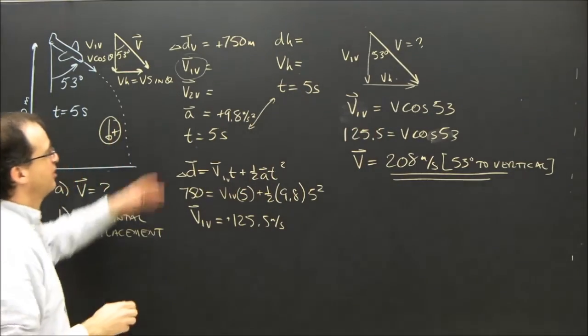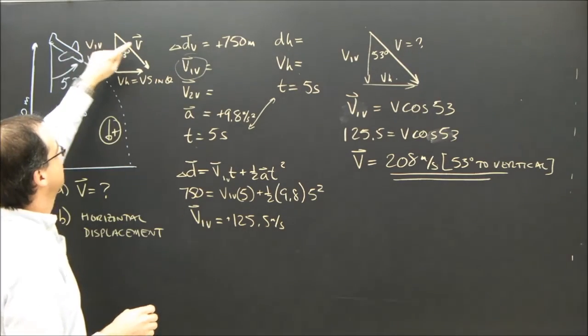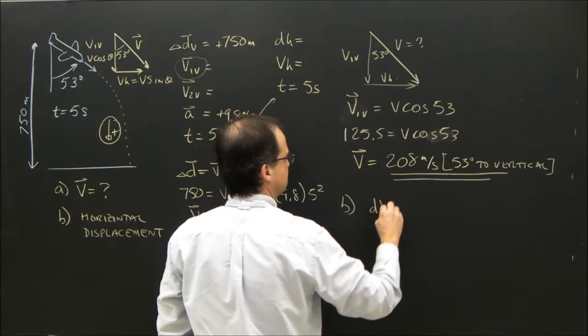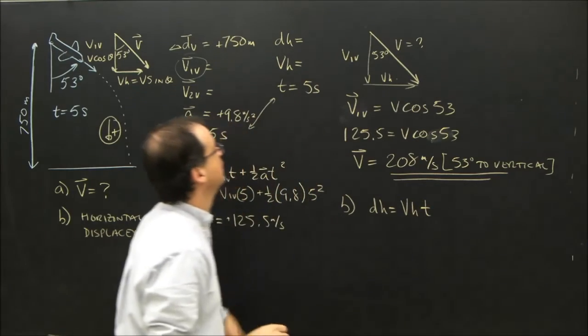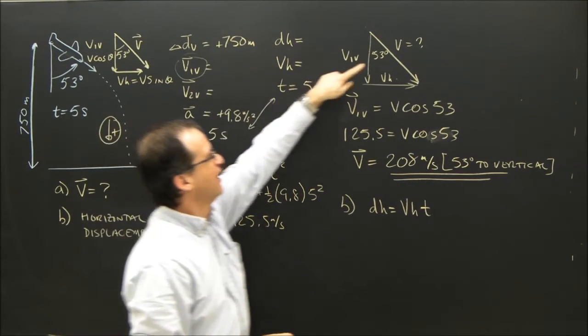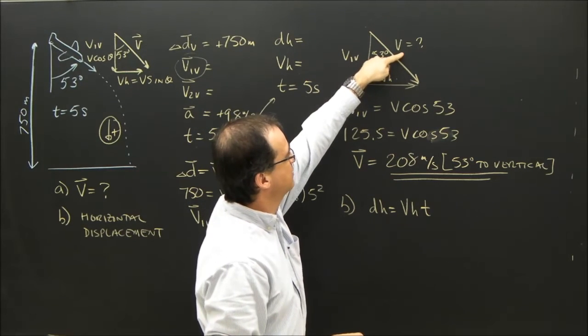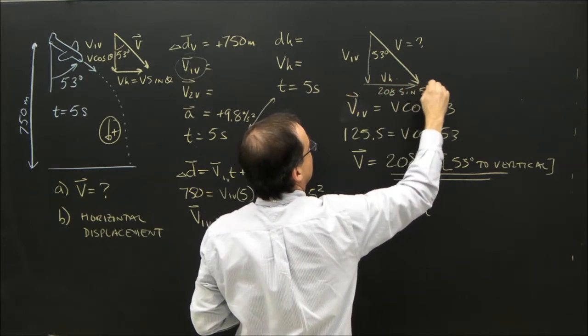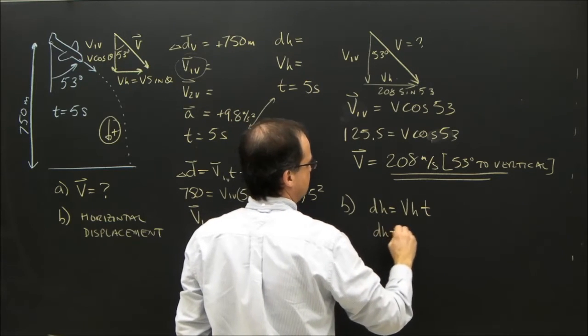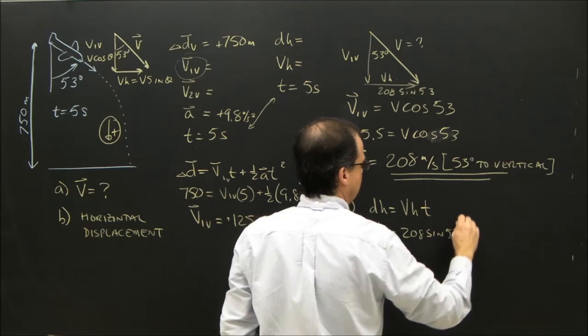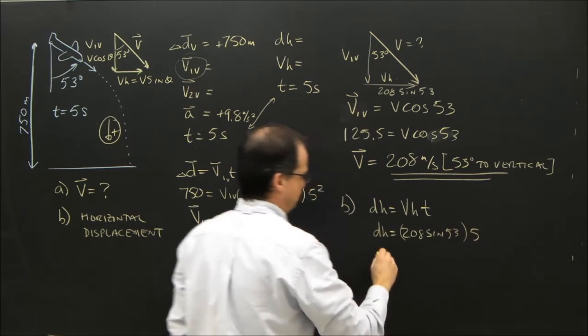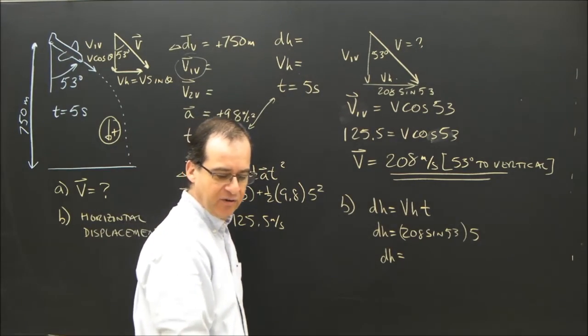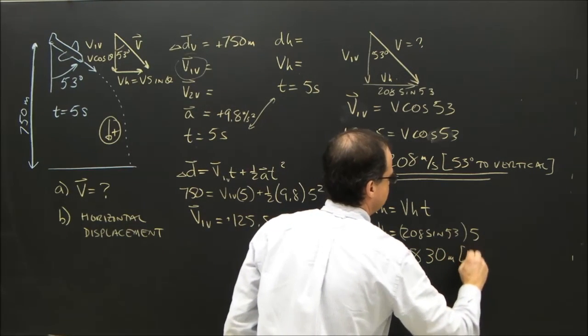Okay? So remember, all I did was look at the vertical, found out what I could find, I found this, and I knew there was a relationship between that velocity and that. Now let's find the horizontal distance. The horizontal distance is the horizontal velocity times time. I don't have the horizontal velocity, but I can figure it out. I know this is 208, and I know this is 53 degrees, so this must be 208 sine 53. So the horizontal distance is 208 sine 53 times the time, which is 5. The horizontal distance is 830 meters.